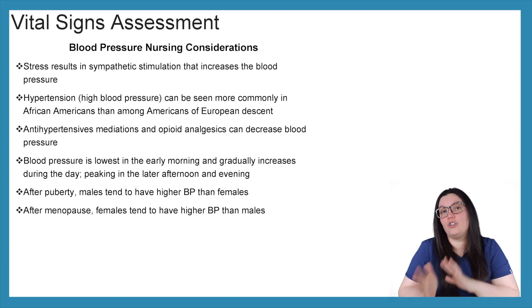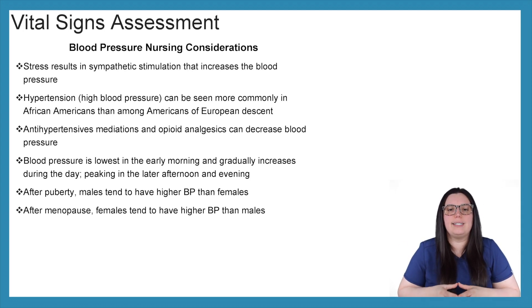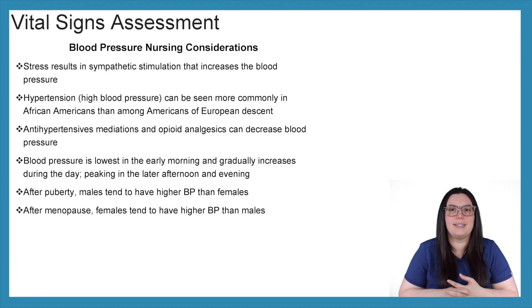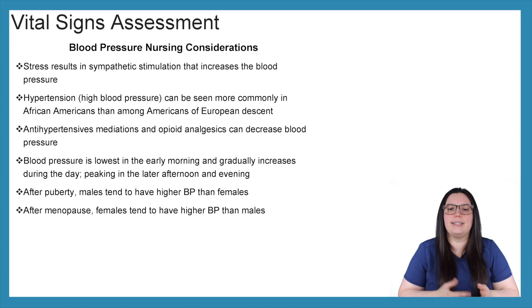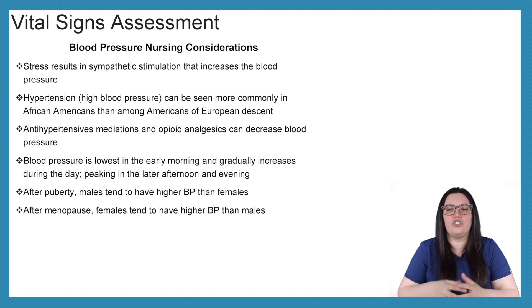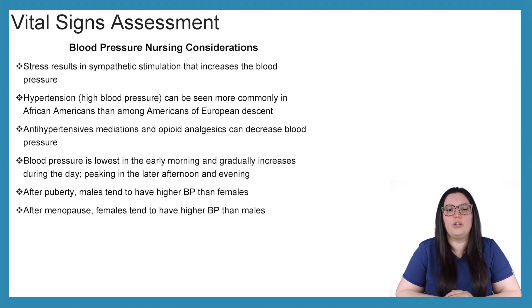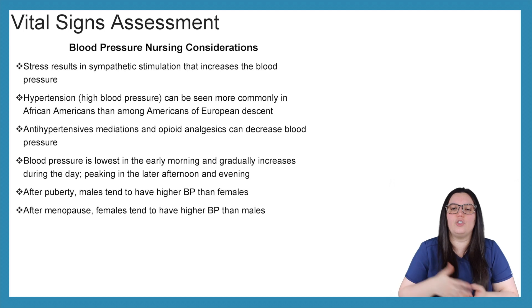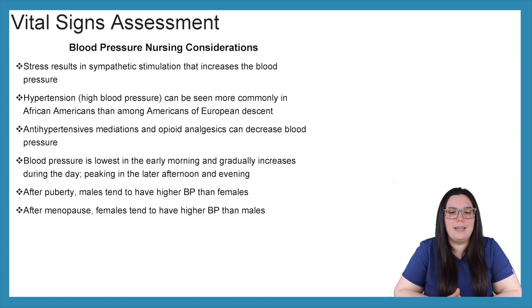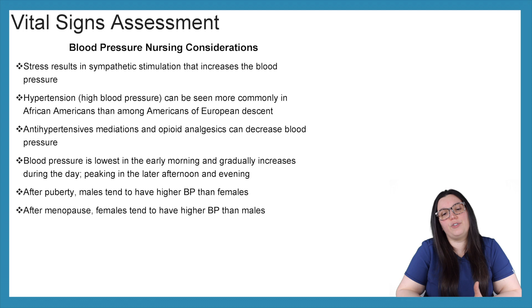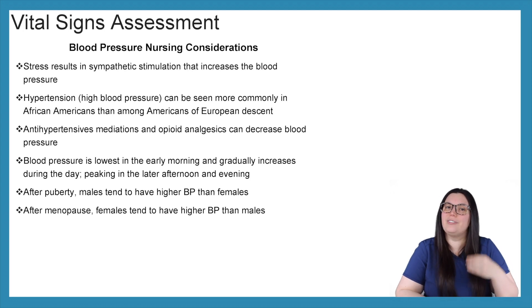Now let's look at nursing considerations for blood pressure. Stress results in sympathetic stimulation that increases blood pressure, so you may get high readings if the patient is very stressed. Hypertension is seen more commonly in African Americans than among Americans of European descent. Antihypertensive medications and opioid analgesics can decrease blood pressure, so it's important to monitor those. Blood pressure is lowest in the early morning and gradually increases during the day, peaking in the late afternoon and evening. After puberty, males tend to have higher blood pressures than females, and after menopause, females tend to have higher blood pressures than males.